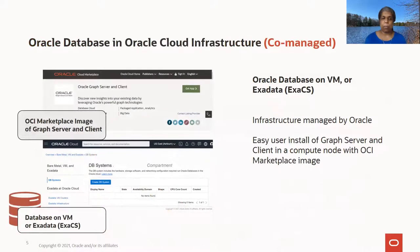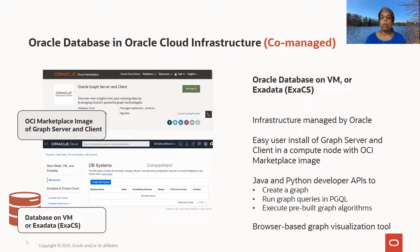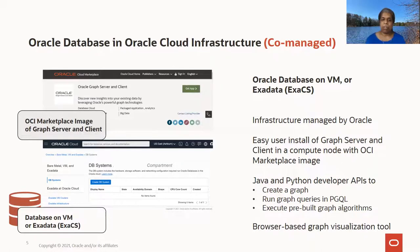Next is the co-managed option, where you install and deploy your database on Oracle Cloud Infrastructure and then use the OCI marketplace image for graph server and client. The marketplace image makes it easy to install and deploy the graph server and graph client components. Once done, you have access to the Java and Python developer APIs to create a graph, run graph queries, and execute graph algorithms. Functionality-wise, the graph features are the same as the fully managed option; the difference is you do the manual install and manage the environment yourself.